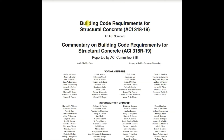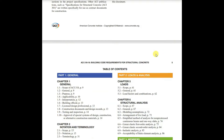The code is titled 'Building Code Requirements for Structural Concrete — ACI 318-2019' as per an ACI standard, along with the commentary on building code requirements for structural concrete, ACI 318R-19. This is reported by ACI Committee 318.